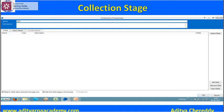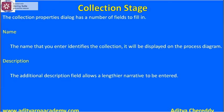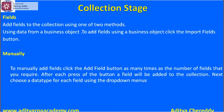If you click on the import fields option, you can see all available business objects, and from there you can download the fields from the business object into the collection. There are two methods to add fields to the collection: using data from a business object, or you can manually provide inputs.